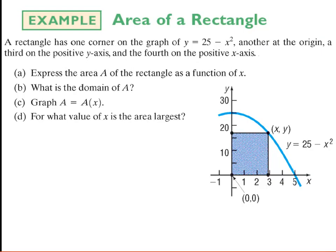Let's look at a second example. A rectangle has one corner on the graph of the parabola y equals 25 minus x squared, another at the origin, a third on the positive y-axis, and a fourth on the positive x-axis. Part A asks us to express the area of the rectangle as a function of x. I'm sliding a point along the parabola — at each stopping point, there's a horizontal and vertical line that creates a rectangle, and I want the area of that rectangle.